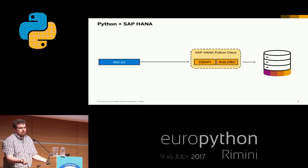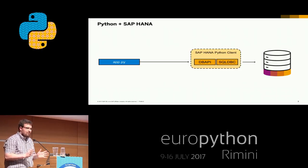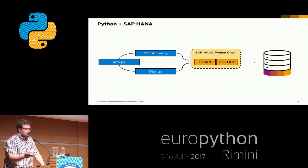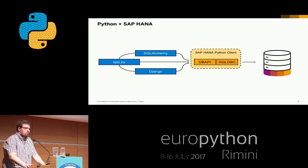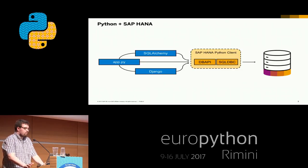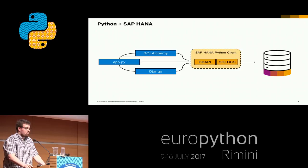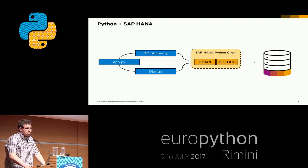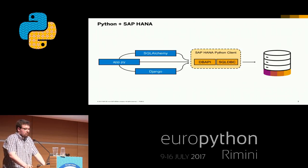As most Python developers don't write SQL anymore — and personally I can totally understand this — we also have some open source projects to interact with the database. There's one dialect for SQLAlchemy. You can run SQLAlchemy very easily with HANA, and it makes a lot more fun than writing SQL. Or there's also another open source project to use SAP HANA as a data backend for Django itself.